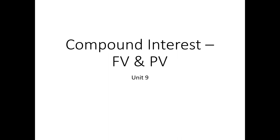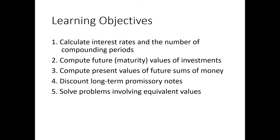Compound interest, future value, present value — Unit 9. In this chapter, we're going to calculate interest rates and the number of compounding periods. We're going to compute future values, sometimes called maturity values, and present values. We'll talk about long-term promissory notes, and bring it all together with equivalent value problems — similar to what we saw in Unit 5 with simple interest. Timelines are very important, and we'll use all our formulas, of which there are really only two in this unit.